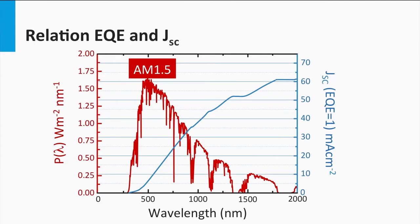In this graph, the spectral power density is shown in red. The blue line represents the theoretical short circuit current density at a wavelength lambda. It shows that up to a wavelength of 2000 nm, we could theoretically generate a short circuit current density of 62 mA per square centimeter. Let's consider crystalline silicon having a band gap of 1.12 eV, which equals a wavelength of 1107 nm. This gives a theoretical current density for crystalline silicon of 44 mA per square centimeter.